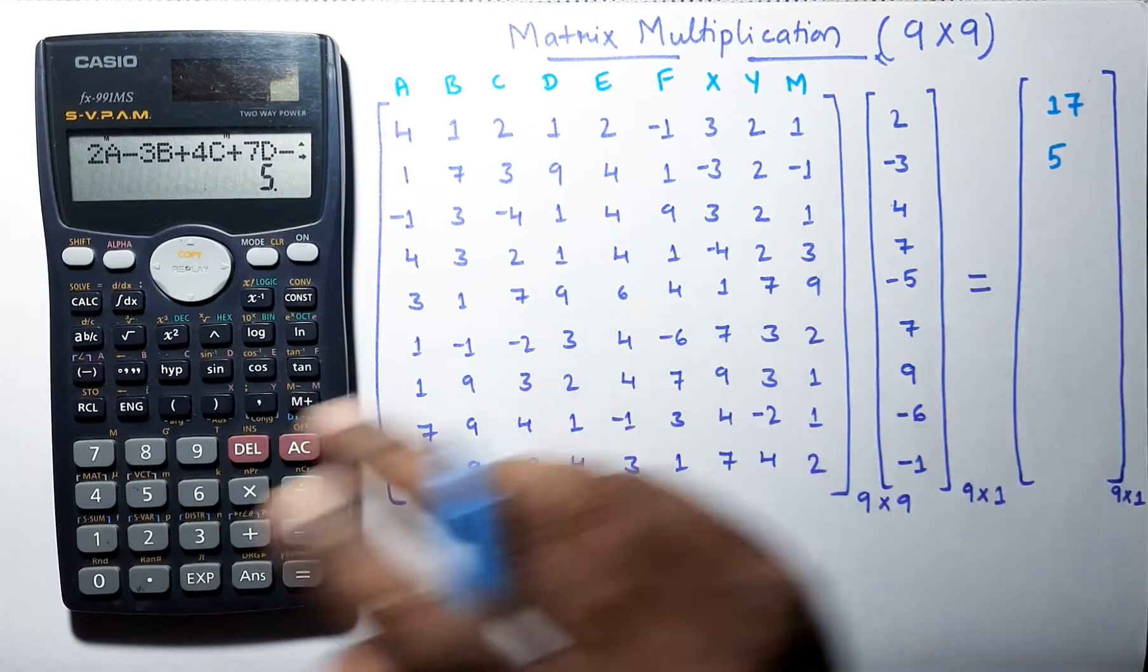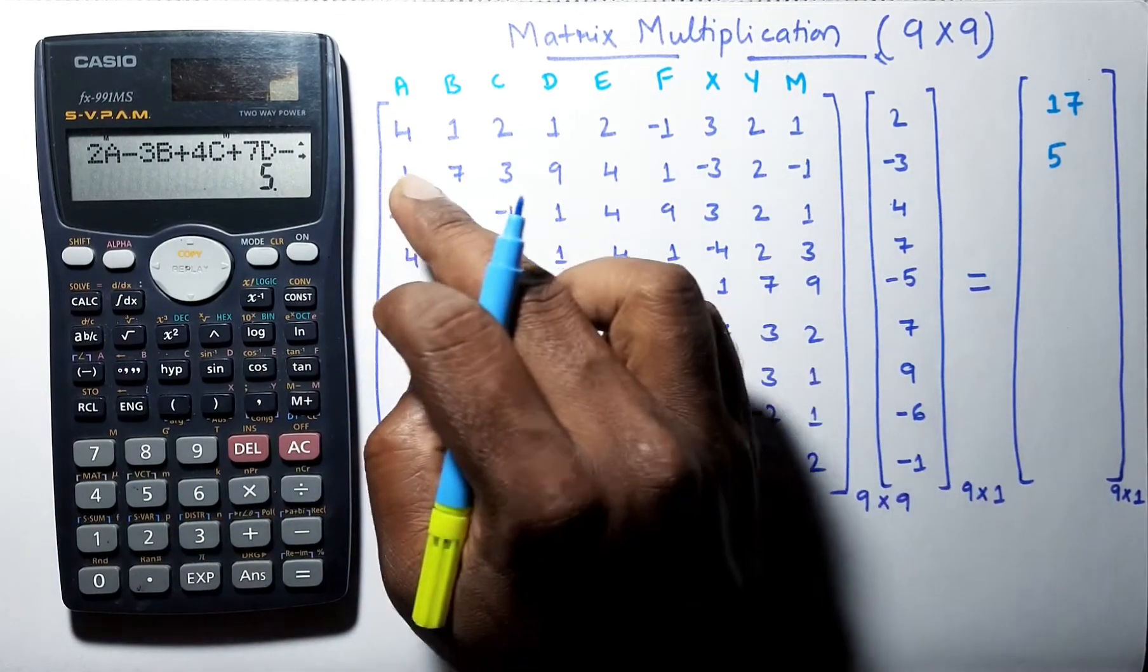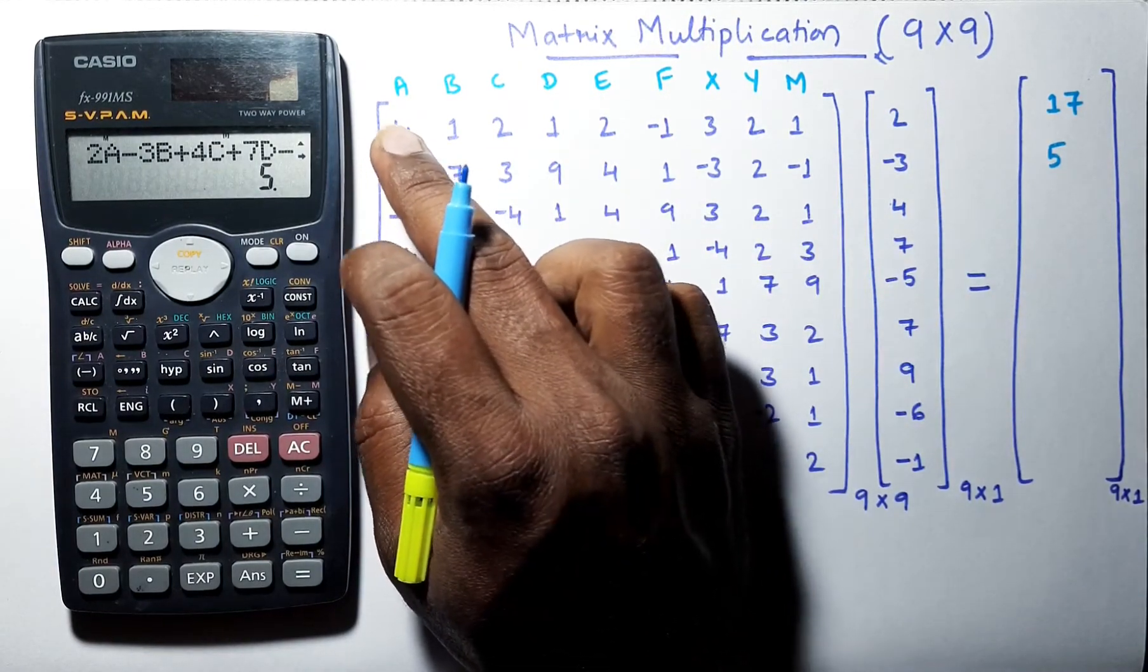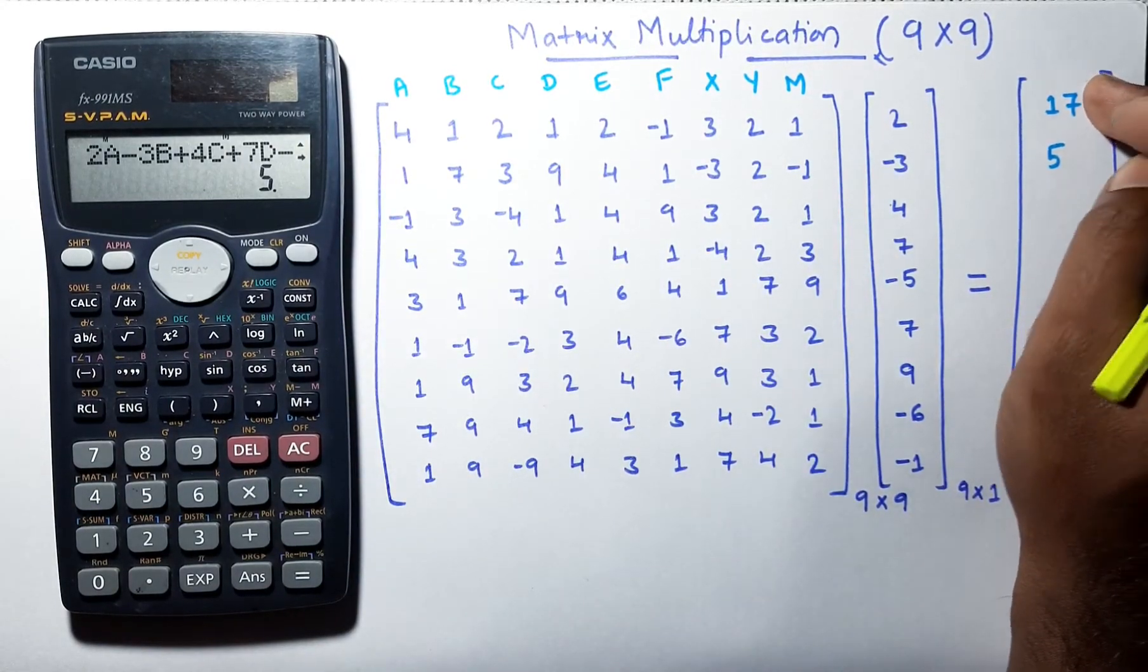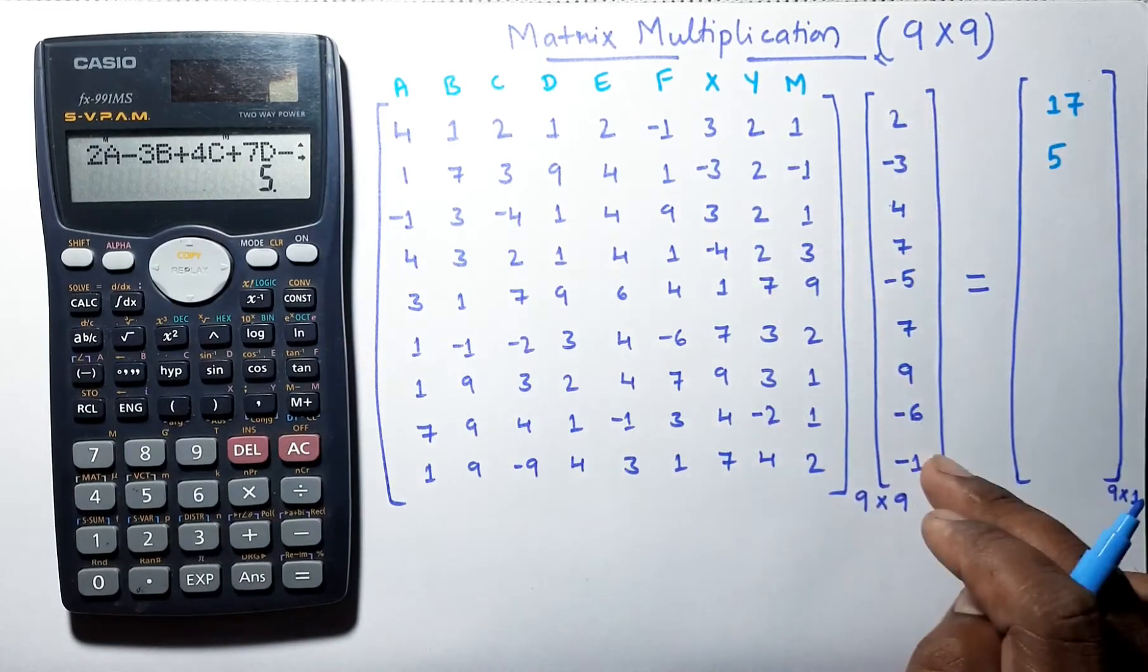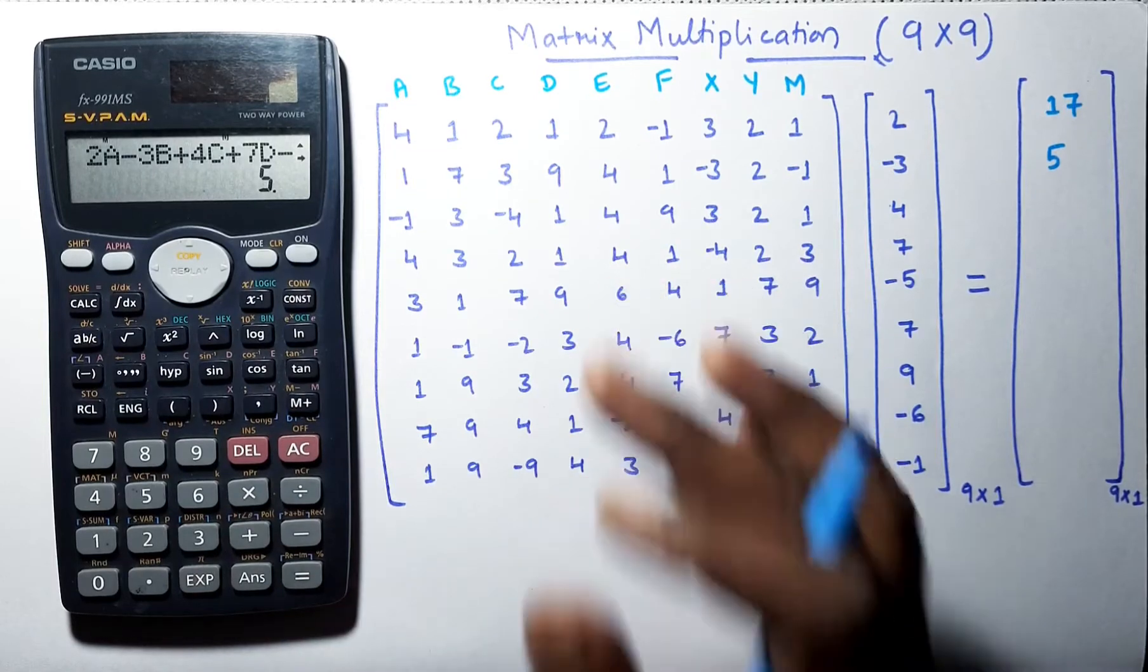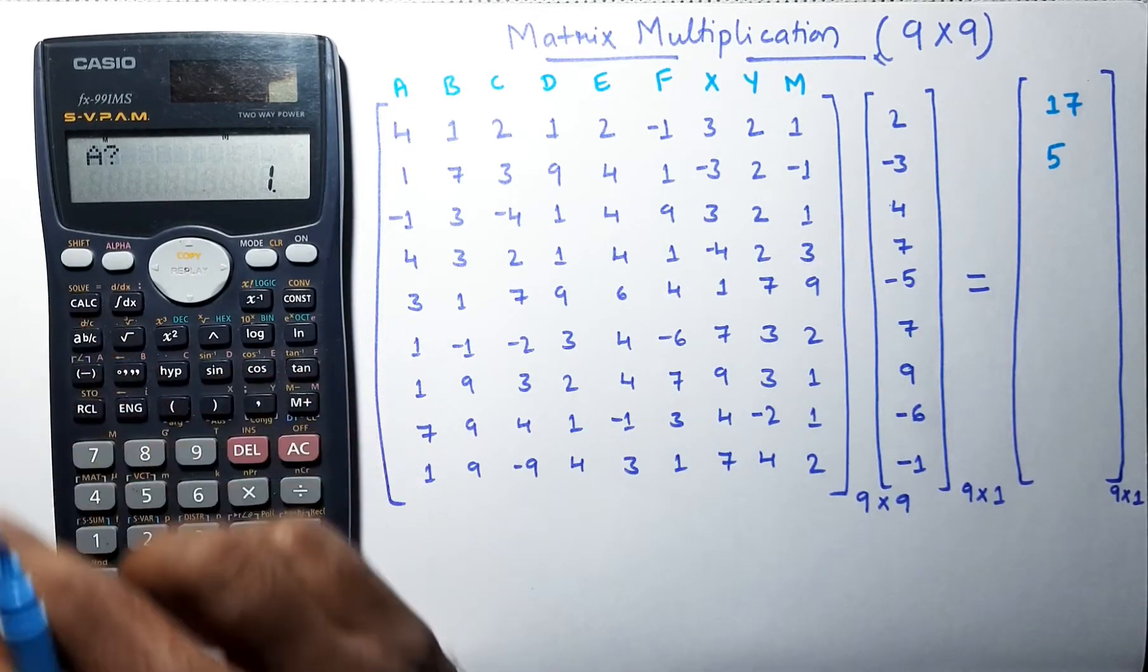In this way, we have to calculate all the values. Here, we are just following conventional method, that is, first row is multiplied by first answer. Then, similarly, second row is multiplied by this column, and we are getting the answer. In this way, we are doing this, but we are just using these variables to simplify our calculation.